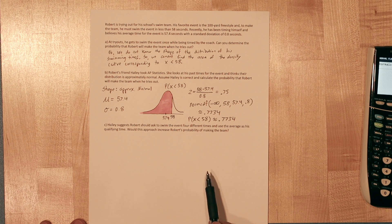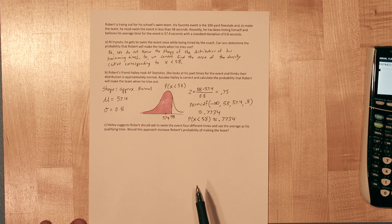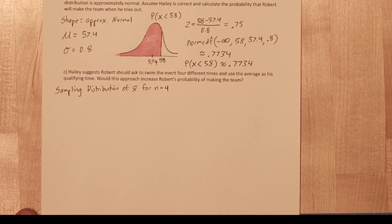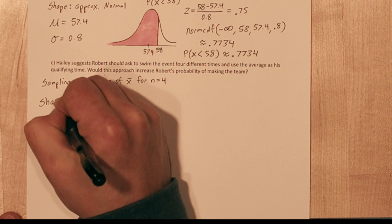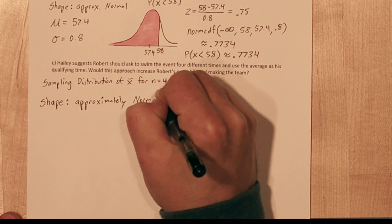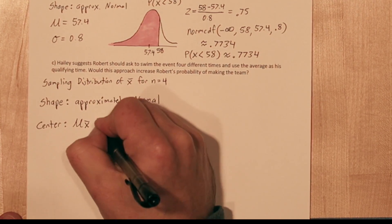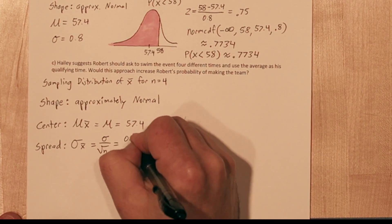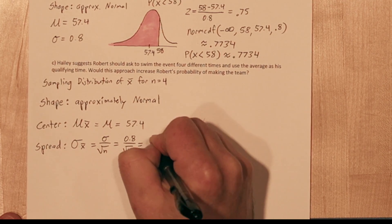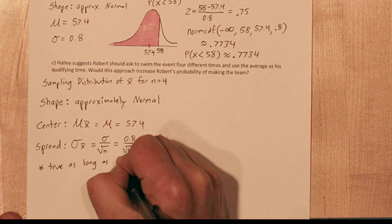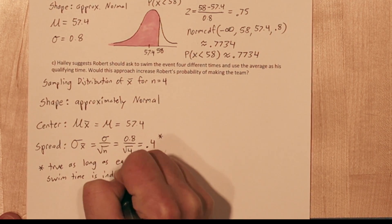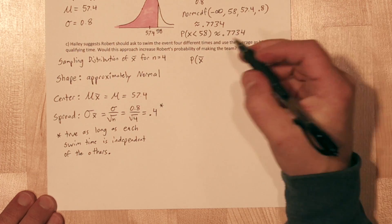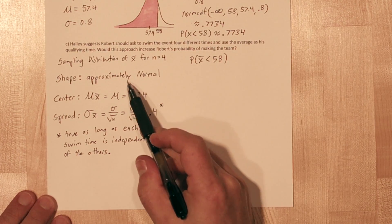In the next part, we're interested in taking the mean of 4 swims, and whether it improves Robert's chances of making the team. So we're really interested in the sampling distribution of x-bar for a sample size of 4. Here's what we know about this sampling distribution. The shape is approximately normal. We have that from our assumption in Part B. The center is at the true mean, which is 57.4. We can calculate the spread using the standard deviation of the sampling distribution. We take sigma divided by the square root of our sample size, and we get 0.4. We can only do this calculation as long as we assume that each swim is independent of the others.